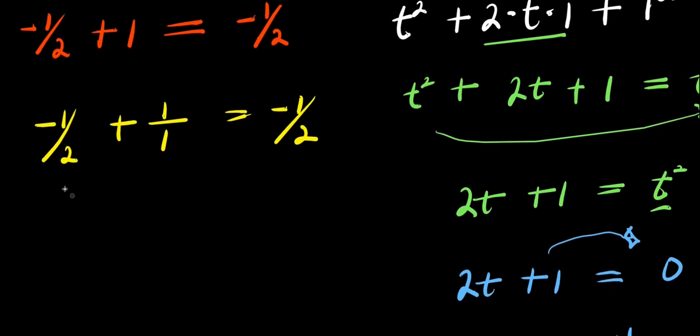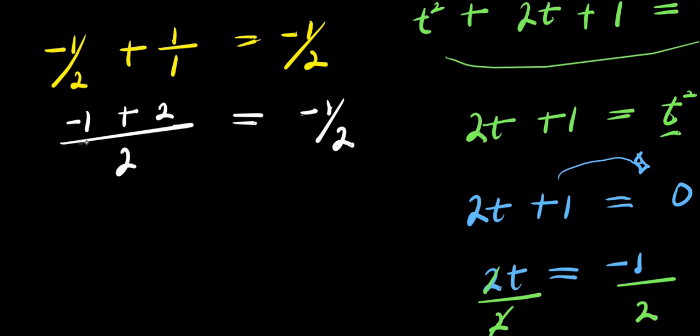So we can easily find the common LCM right here which is 2. 2 divided by 2, 1 times negative 1, that is negative 1 plus 2 divided by 1, 2 times 1, that is 2. And this equals negative 1 over 2. So from here we have negative 1 plus 2, since we are subtracting a smaller number from a bigger number, we have positive 1 over 2.